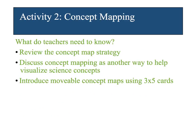After they're finished reading and annotating, students are going to work on a concept map. It's a good idea to review the concept map strategy — if they did Unit 1, they're already familiar with it, but they're going to build on it a little more. We talk a lot about visualizing in science, and a concept map is another good way to do that. Not only will they make a paper concept map, but they'll also make a movable concept map using three-by-five cards.